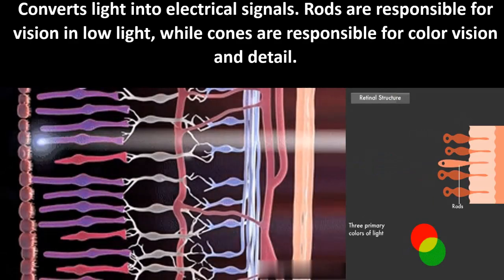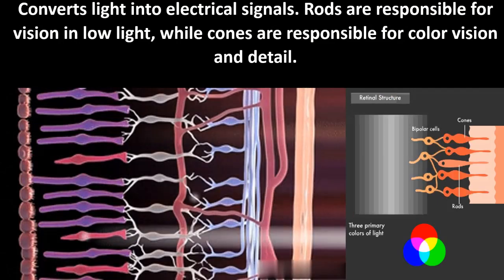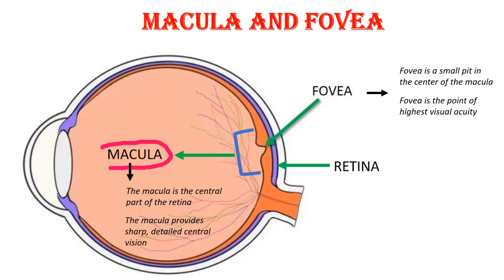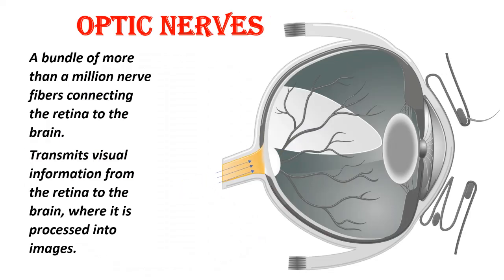Rods are responsible for vision in low light, while cones are responsible for color vision and detail. Macula and fovea: The macula is the central part of the retina and the fovea is a small pit in its center. The macula provides sharp, detailed central vision, and the fovea is the point of highest visual acuity.